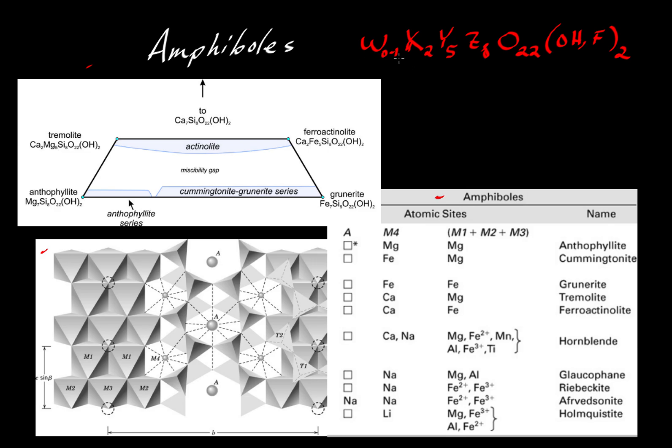So the W cation, this is the general formula for the composition: W and then X2Y5, Z8O22, then OH and fluorine, some combination of two of those. So the W cations, these are the fellows that would go into the A sites. They would be in 10 or 12 fold coordination. So where are the A sites? We come over here, there are these big sites here. So let's first back up and take a look at the structure itself.